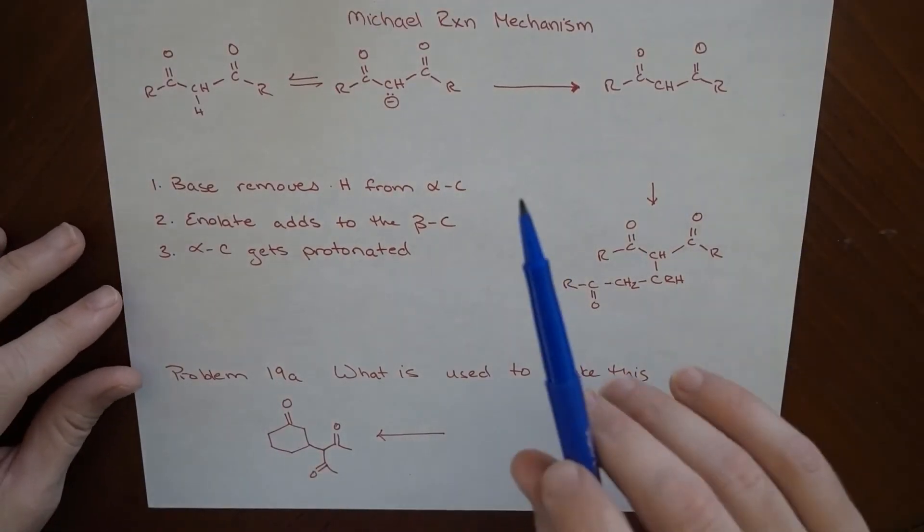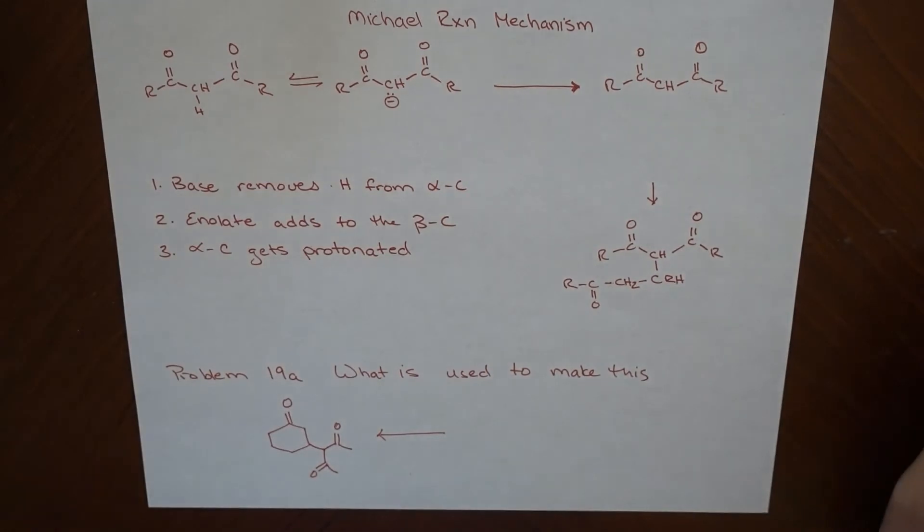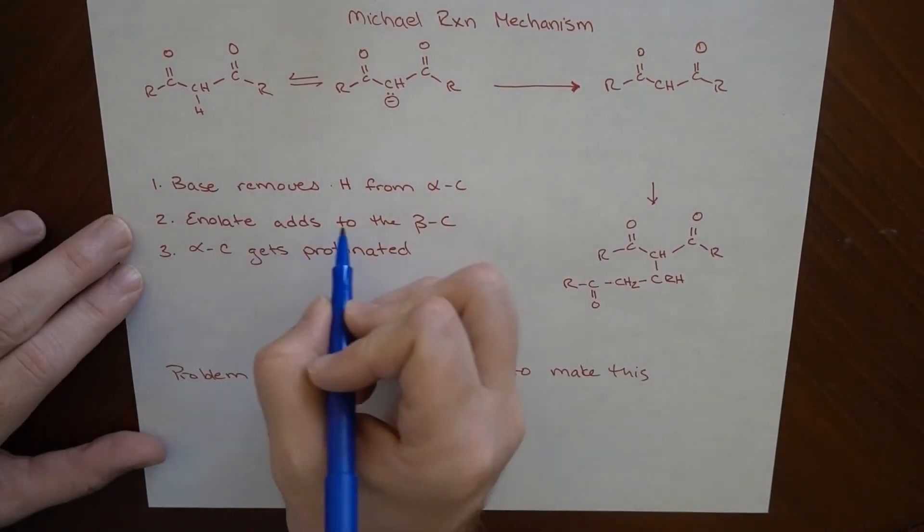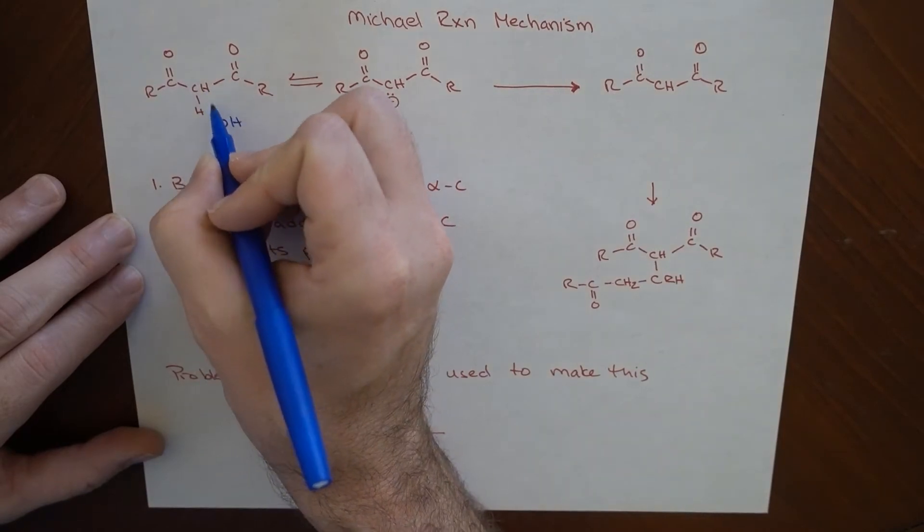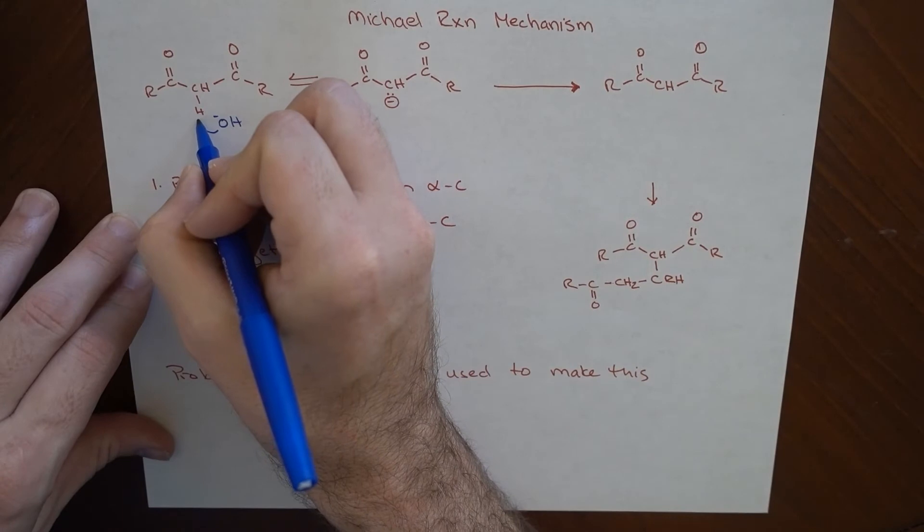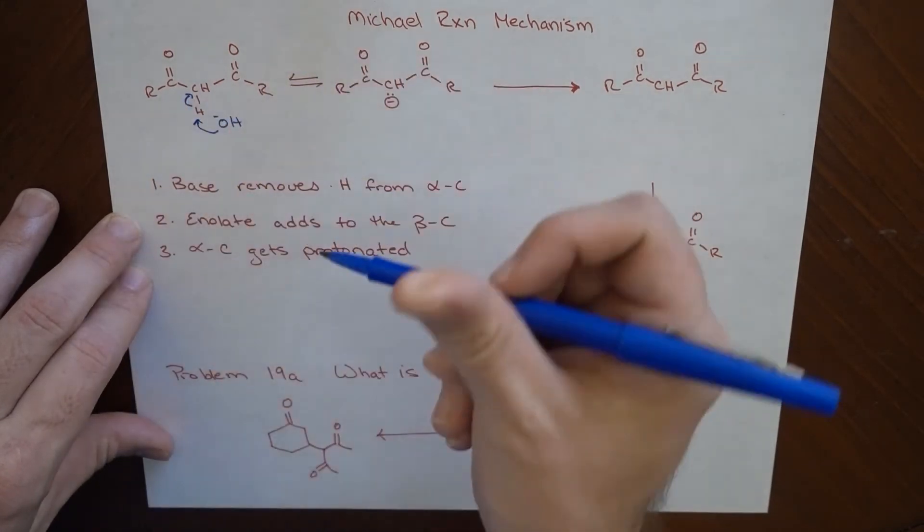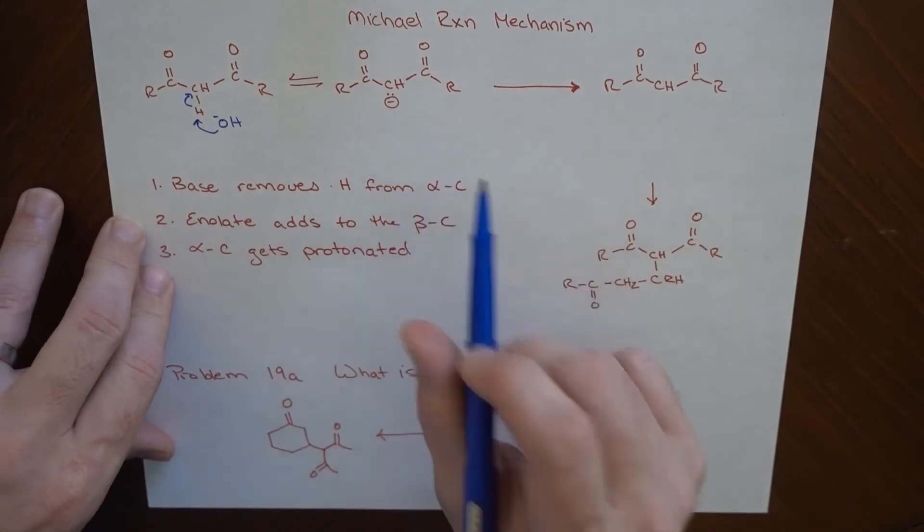Okay everybody, let's go over the reaction mechanism for the Michael reaction. So the first thing that happens here is some base ends up removing this proton from this dicarbonyl compound. It's the most acidic proton there. So the base is going to grab onto this and the electrons are going to go up to here. So that's going to leave us with our enolate anion.